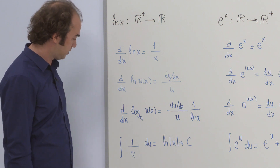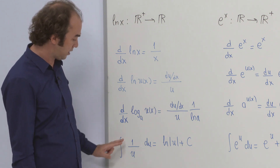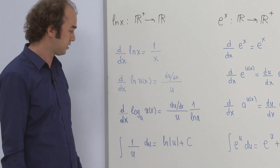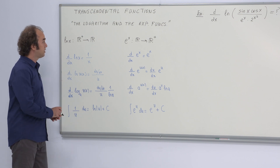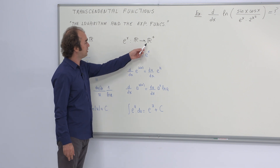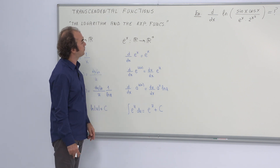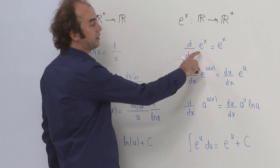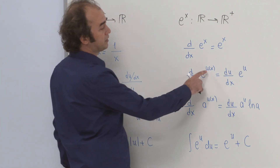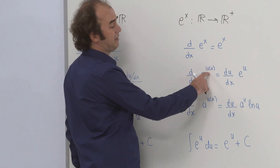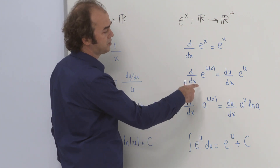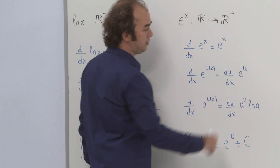The well-known result: the integral of 1 over u is the logarithm of the absolute value of u plus an arbitrary constant c. Remembering the exponential function, its domain is the set of real numbers and the range is the positive real numbers. It is well known that the derivative equals itself. If the power is any function u, you differentiate e^u in the form u' times e^u.